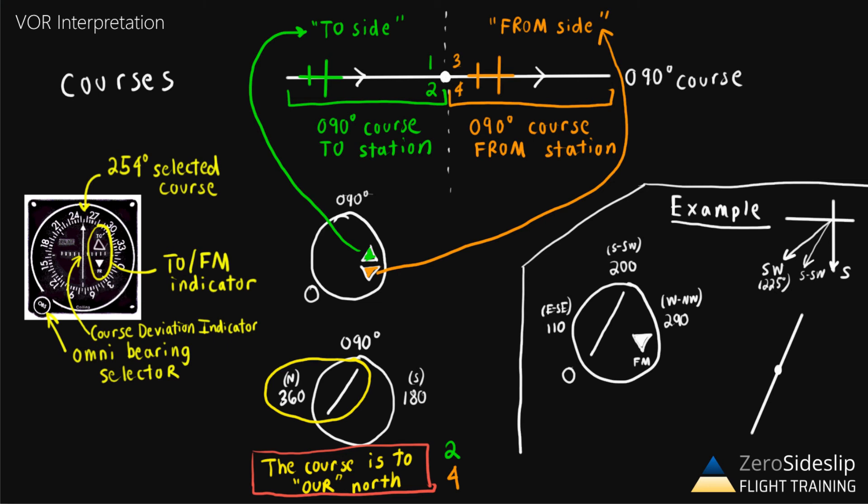Then if we drop that perpendicular line we were looking at before, we can break this down into two possibilities. Since we have a from indication, that tells us we're going to be on the from side. So this is 200 from, and this would be 200 to.